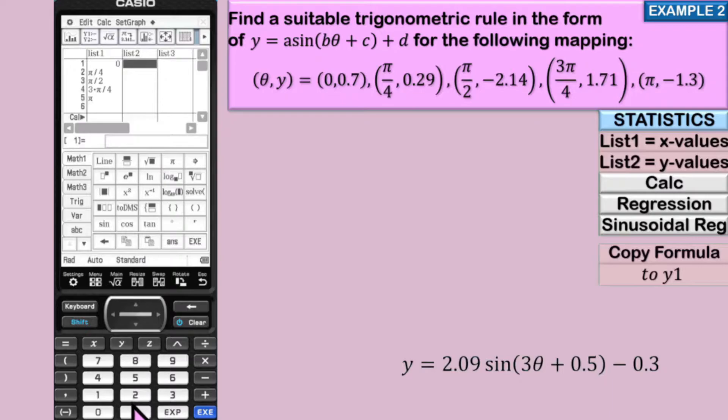In list two, we're going to put all our y values. So we have 0.7, 0.29, negative 2.14, 1.71 and negative 1.3. Enter.